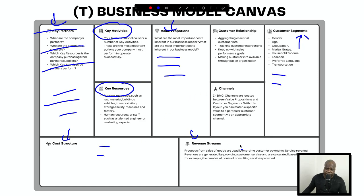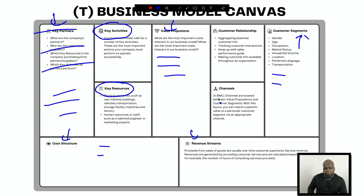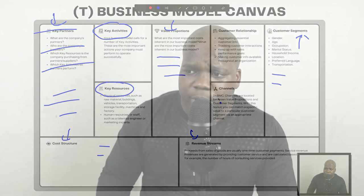The important parts are the value proposition, who your customers are, the costs, and the revenue. When you have a general idea of how it works, you know what you can do and what you cannot do. In the description I'll put a link where you can download it.